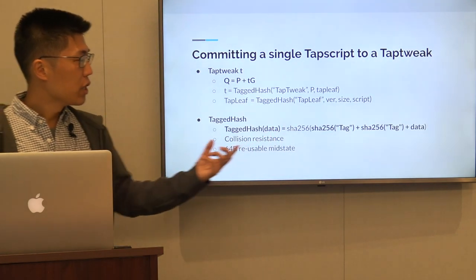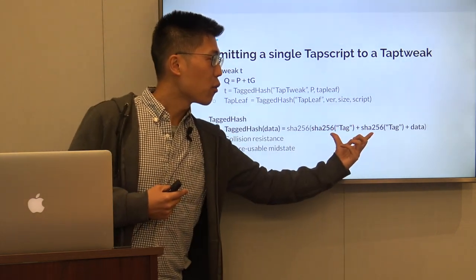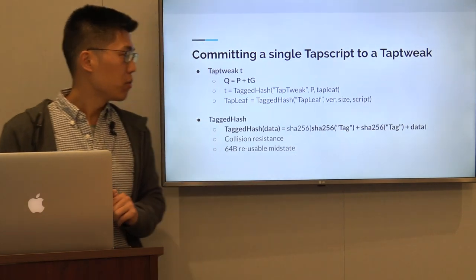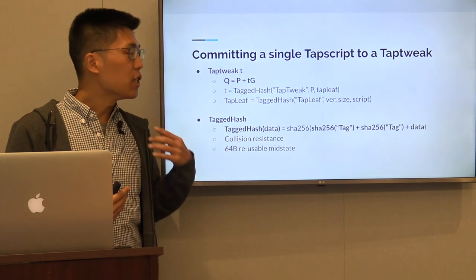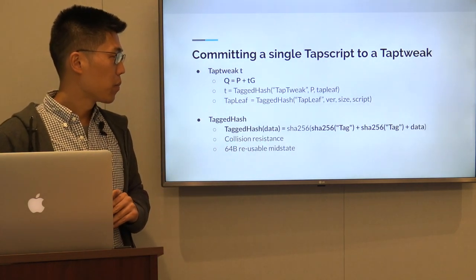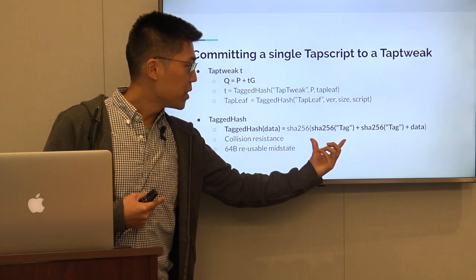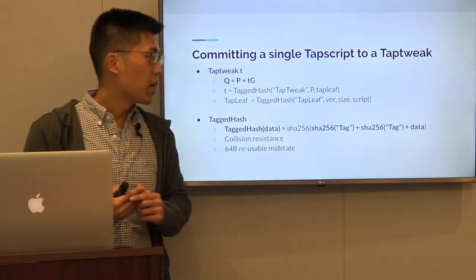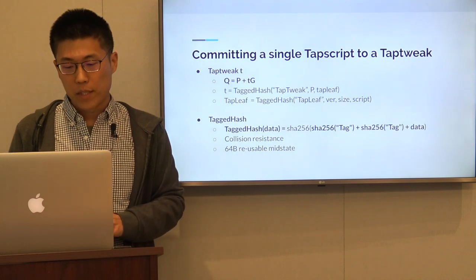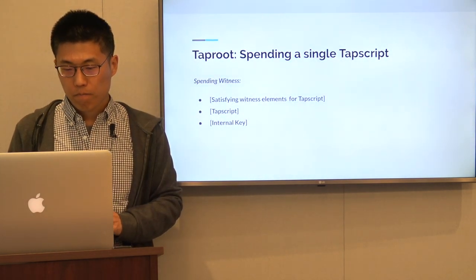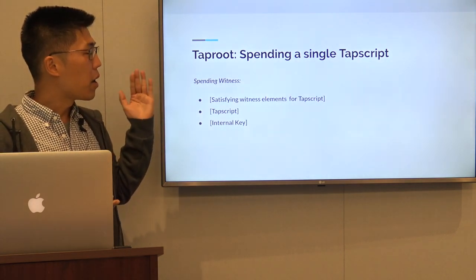The tagged hash is a new hashing scheme used in taproot. Looking at the input that goes into a tagged hash, we hash the tag twice with SHA-256, providing a 64-byte chunk that can be reused — which is helpful for implementation optimization. Since it is a new hashing scheme, it also provides collision resistance in Bitcoin because it hasn't been used before. The domain-specific tag is appended twice, providing 64 bytes of reusable mid-state.